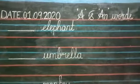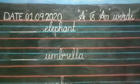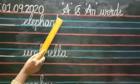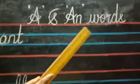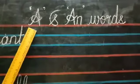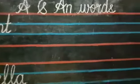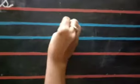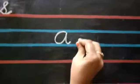Good morning, children. This is your English period. I am your English teacher, children. Today I am going to teach you A and AN words. All of you look at the board. I had already taught you a few words. I will teach you how to use A and AN words.